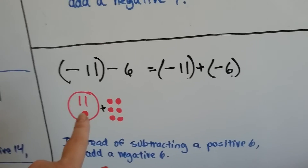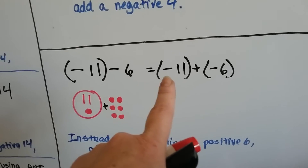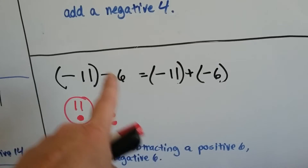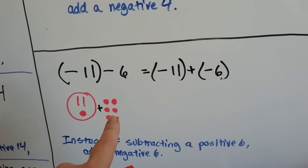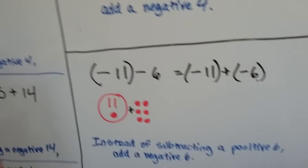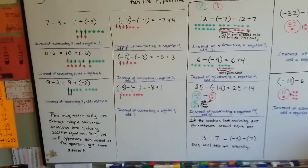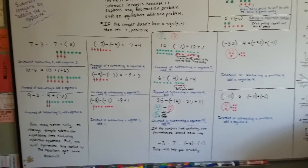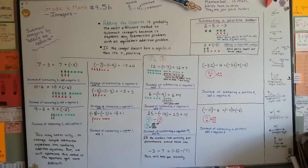We've got 11 red chips and it says subtract 6. So we change the sign — we add a negative 6 and flip the signs around. We have 11 red chips and add 6 more red chips, giving us 17 red chips. Even though in the beginning it seemed silly to do this with easy problems, you can see how it makes subtracting integers easier by changing the sign.